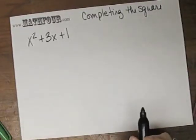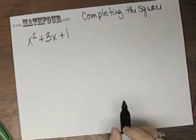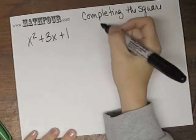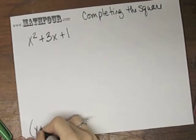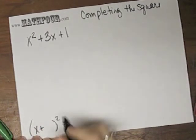We have one last completing the square problem. x squared plus 3x plus 1. Remember our goal is x plus something squared plus something else.